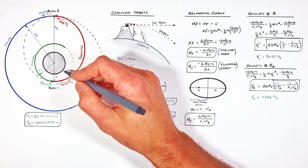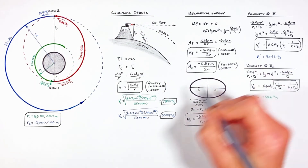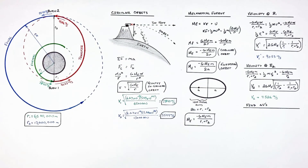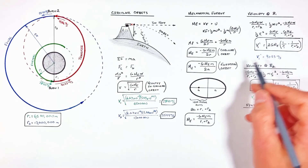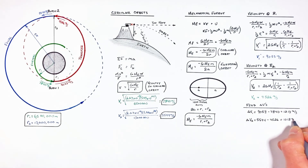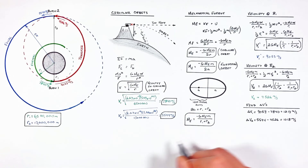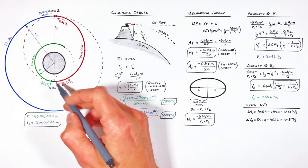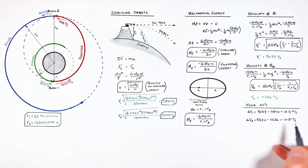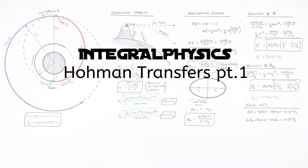Typically when working a Hohmann transfer problem, you'll be asked to solve for the two changes in velocity, delta-v. Given the initial and final velocities from each burn, that's straightforward: delta-v equals final velocity minus initial velocity. Once you have these two delta-v values for a specific rocket or satellite, you can apply the rocket equation to solve for the total mass of propellant that needs to be burned to achieve both changes in velocity. But that's an issue for another day — hope you found this discussion of a Hohmann transfer helpful.